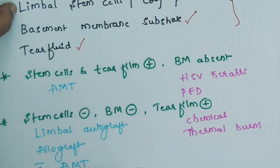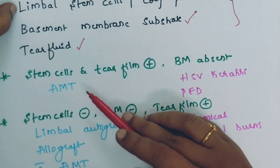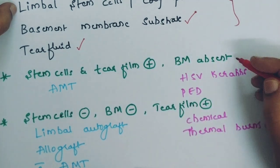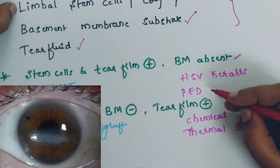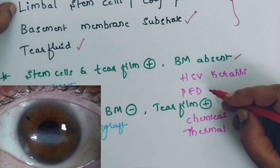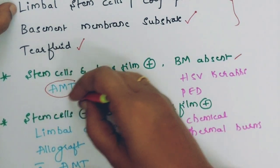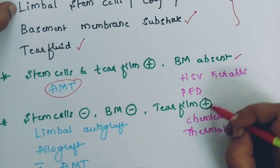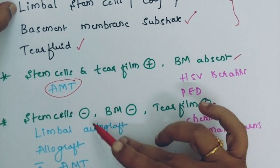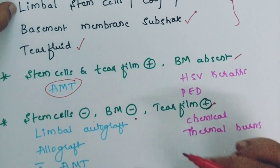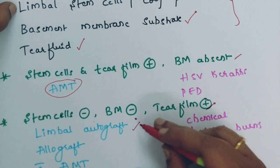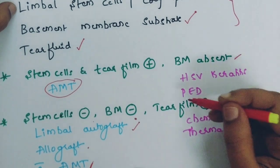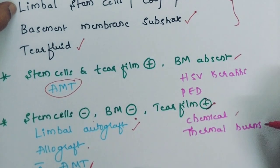There are three scenarios. In scenario 1, the stem cells and tear film are functioning but there is absent basement membrane, as in HSV keratitis or persistent epithelial defect — in this case, you need only amniotic membrane transplantation. In scenario 2, tear film production is normal but both stem cells and basement membrane are affected, requiring limbal stem cell autograft or allograft along with amniotic membrane transplantation — seen following chemical burns or thermal injuries.